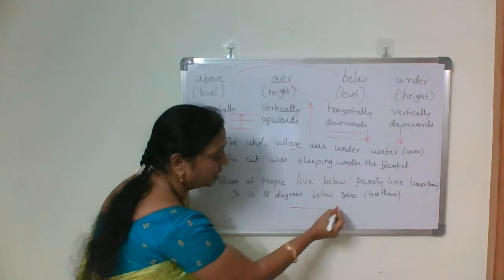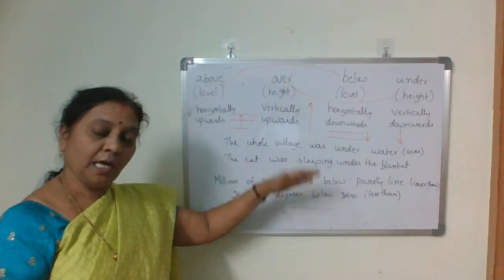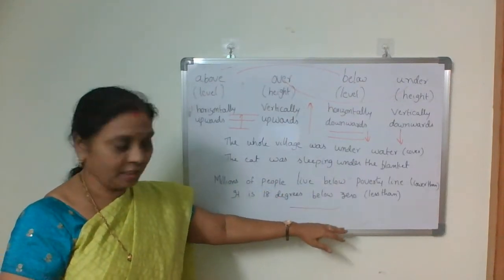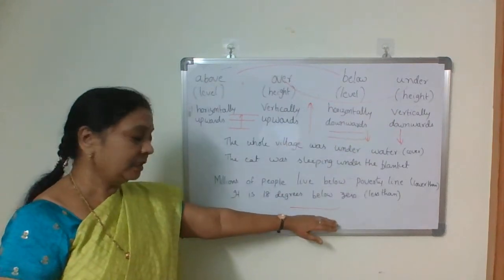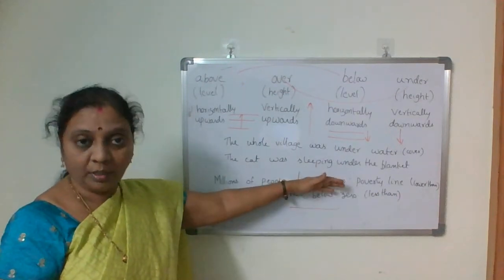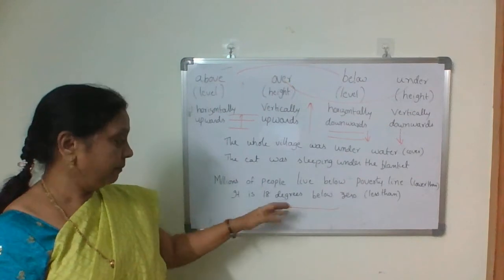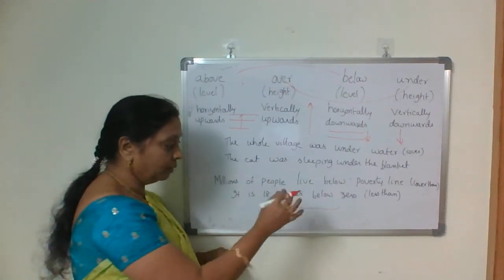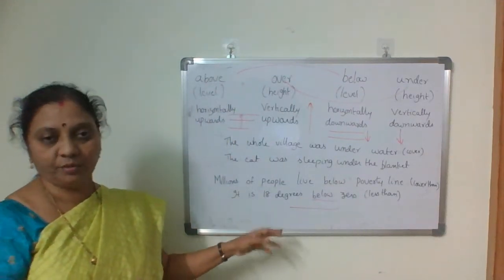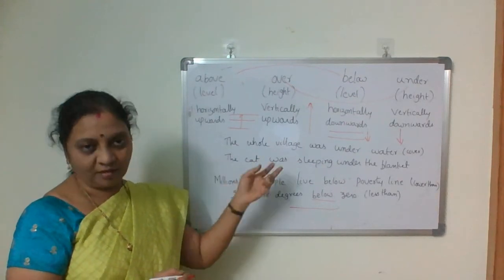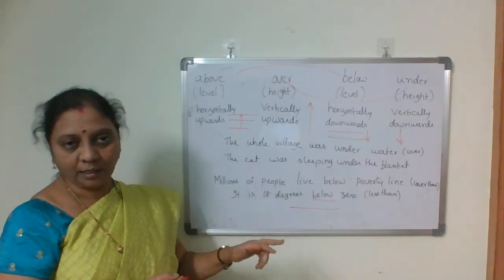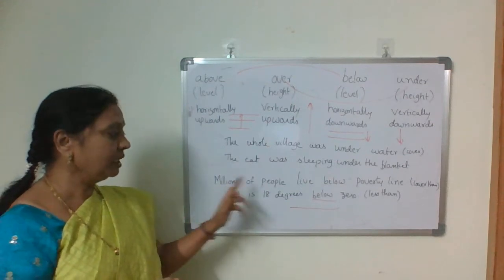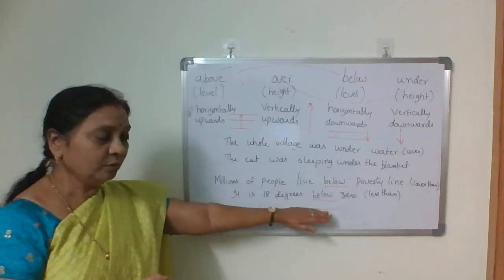If you take a horizontal line like the poverty line, we use 'above' and 'below': 'Some countries are above the poverty line' and 'Millions of people live below the poverty line.' Similarly for student performance: 'His performance is above average' or 'below average.' To express degrees: 'It is 18 degrees below zero.' We use 'above' and 'below' — never 'over' and 'under' — for these cases.